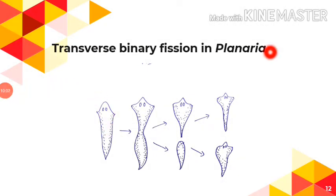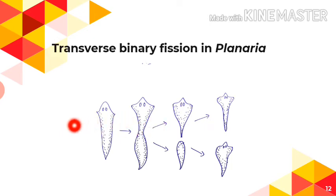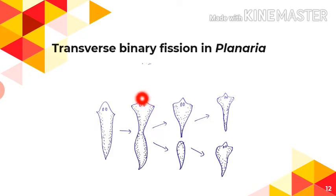Similarly, in Planaria, transverse binary fission takes place — the parent body divides into two daughter cells with the plane of division passing through the transverse axis. So for Planaria and Paramecium there is transverse binary fission, while for Euglena there is longitudinal binary fission.